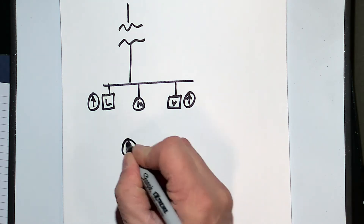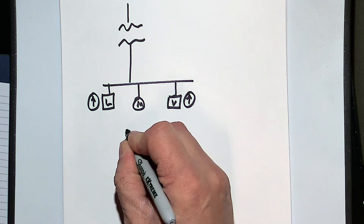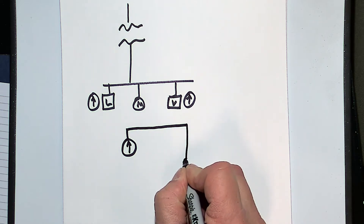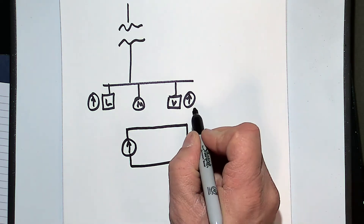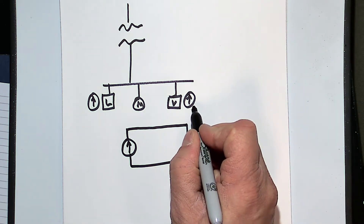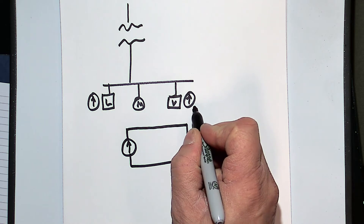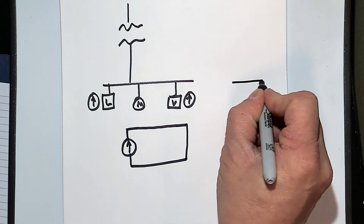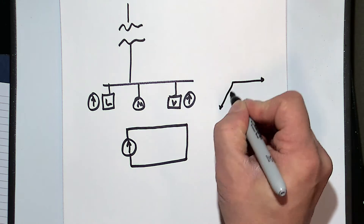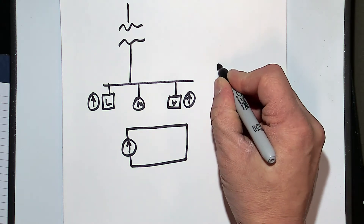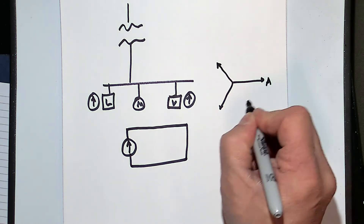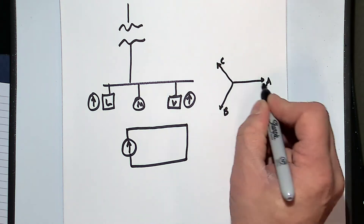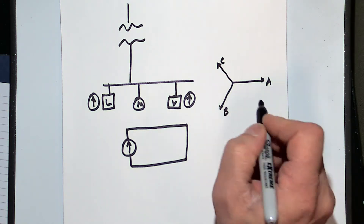What happens is, current by its nature has to flow in a loop. It has to go out and come back. A lot of people think that harmonic currents go out on the phases and back on ground, but they don't. They go out on phase A and come back on B and C. And they go out on B and go back on A and C, and so forth.